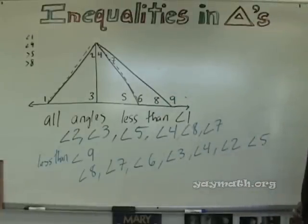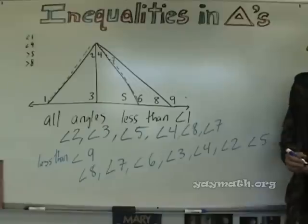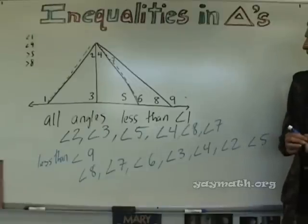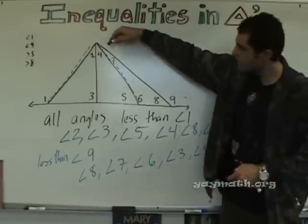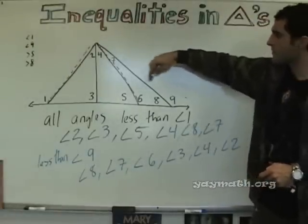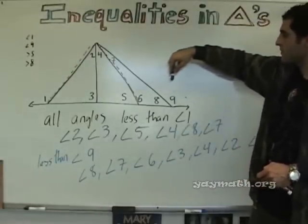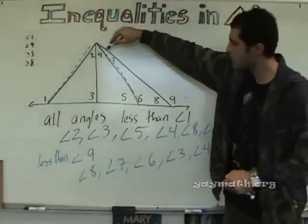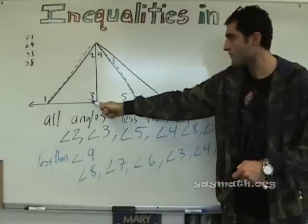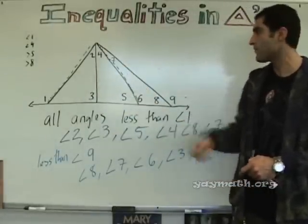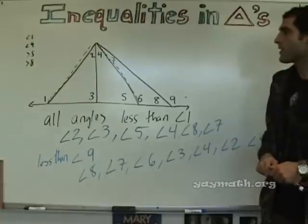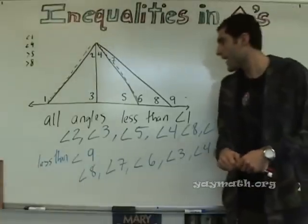And now, all angles greater than five? All angles greater than five is one and nine. Six. That's right. Six. That's it. Three. That's right. Three is the same as four and five.